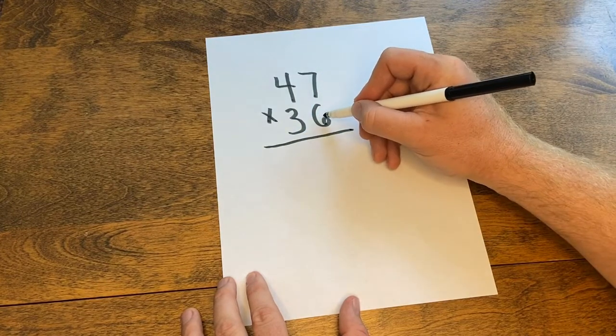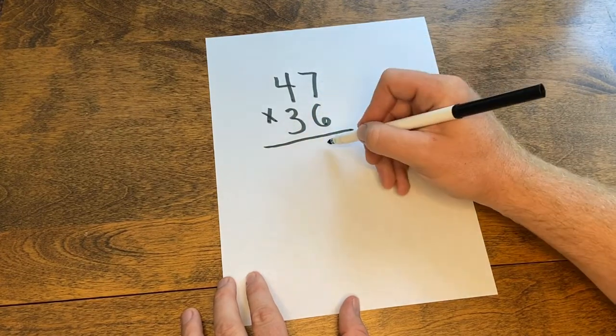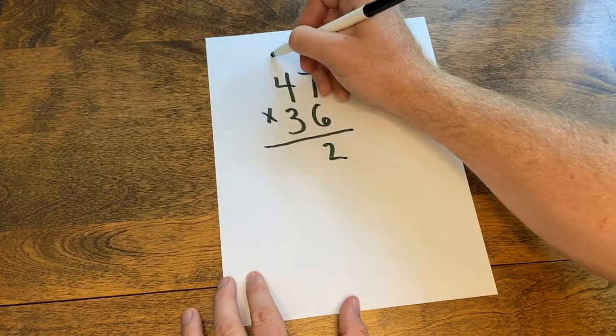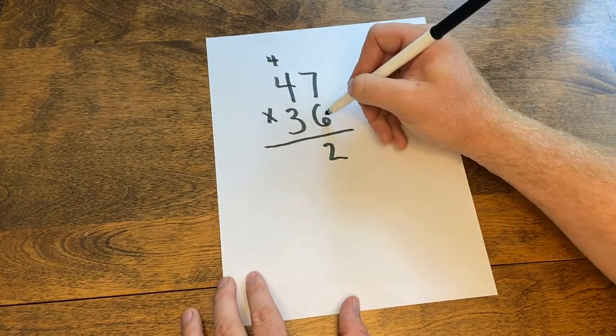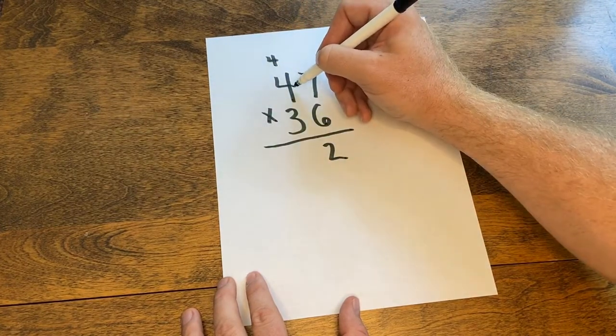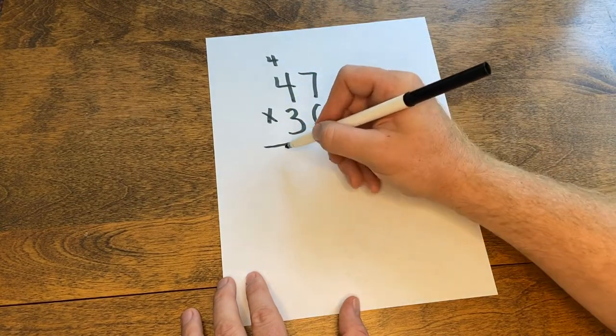And then we'll get started with our six. Six times seven is forty-two. Drop the two, carry the four. Six times four is twenty-four, plus four more is twenty-eight.